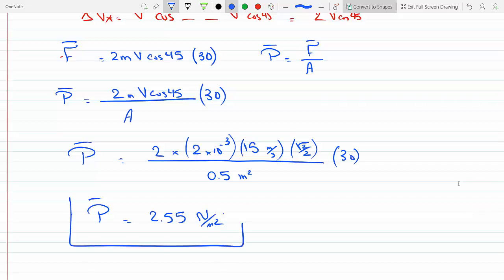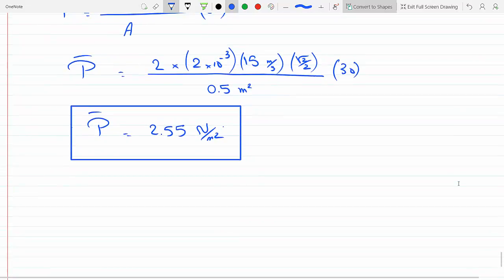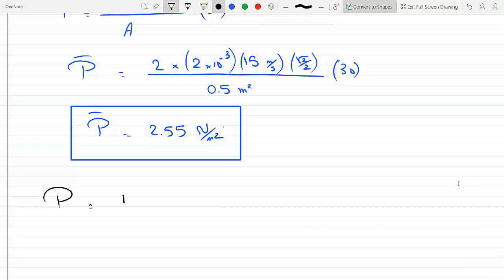It asks to compare that to atmospheric pressure. We know that atmospheric pressure is 1 atm. I could change that to Newtons per meter squared. I know that 1 atm is 1.01 times 10 to the 5 Pascals, which is Newtons per meter squared. So this is the same as 1.01 times 10 to the 5 Newtons per meter squared.